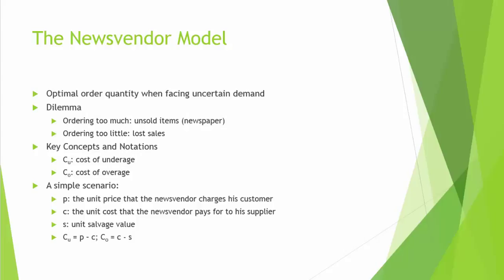To make this trade-off effectively, it is necessary to have a forecast of demand with not only a single sales forecast, but also the potential variation about that demand forecast. Here's an example of such a forecast: the demand follows a normal distribution with mean of 3000 and standard deviation of 1000. We will focus on normally distributed demand forecasts in this chapter.